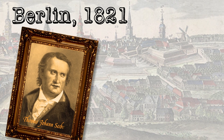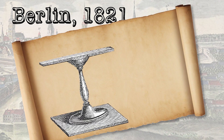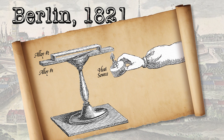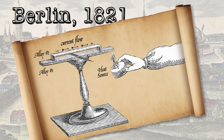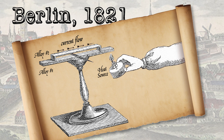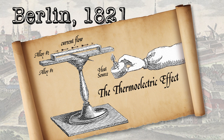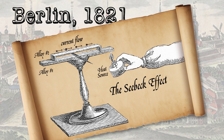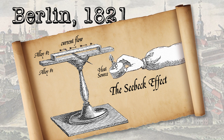In 1821, German physicist Thomas Johann Seebeck observed that when a junction of two dissimilar alloys is heated at one end, an electric current will flow through the circuit, with the magnitude and direction of the current being determined by the temperature difference at the two ends and the thermal properties of the alloys used. This phenomenon is known as the thermoelectric effect, also called the Seebeck effect. Unbeknownst to him at the time, Seebeck had essentially made the very first thermocouple.